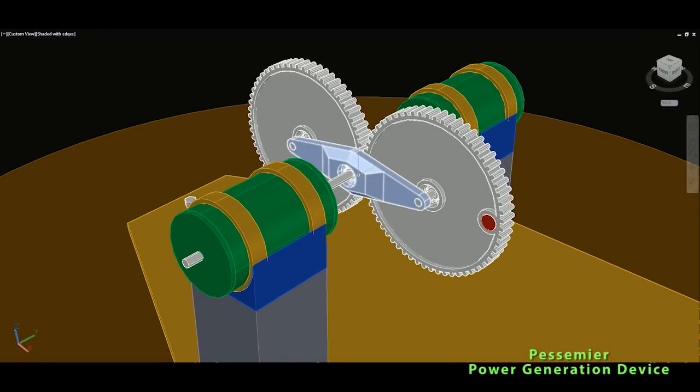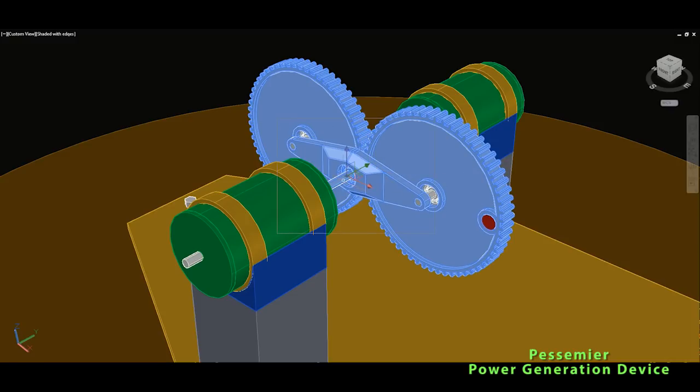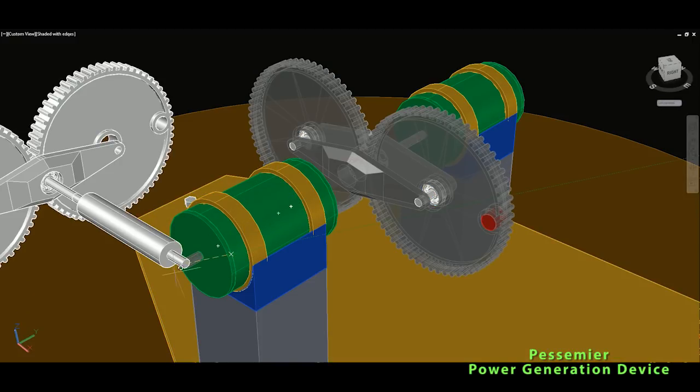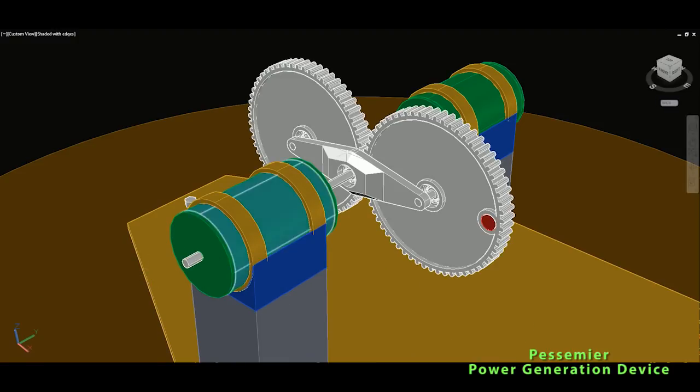And then what? So logically, so these two flywheels will spin here on this shaft. So if I can maybe even rotate this, it could work maybe. No, it's a wrong axis, sorry.